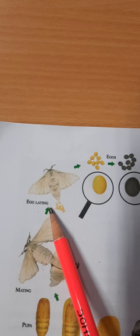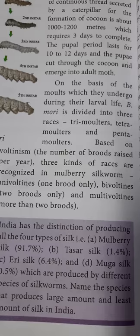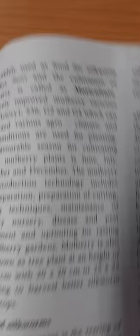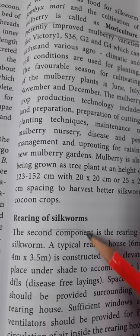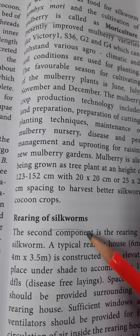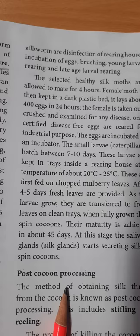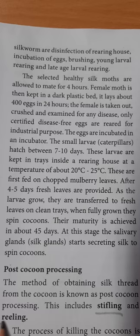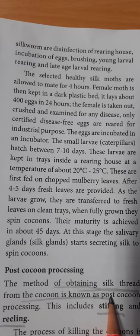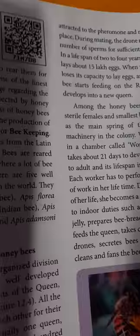Coming to cultivation of food plants for the silkworm: mulberry leaves are the best food for Bombyx mori, and the cultivation of mulberry is called mori culture. The rearing of silkworms is done step by step. After the cocoon is ready, post-cocoon processing begins — the method of obtaining silk thread from the cocoon, which includes stifling and reeling.